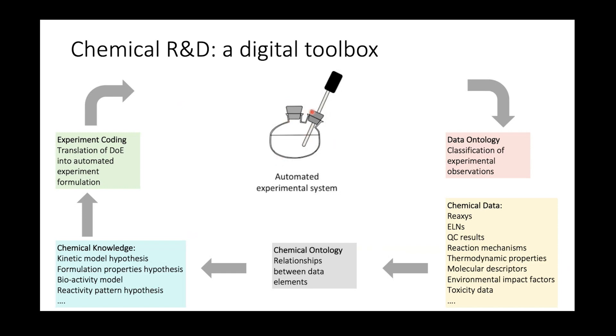Starting maybe in the middle with automated experiments, which generate large amounts of data. The data needs to be classified. So we need to understand what is it our machines have observed, how to place those data in the correct boxes in our data repositories. These repositories are then linked with all of the existing data - commercial databases such as Reaxis or CAS, your institutional ELNs, quantum chemistry results, thermodynamics, reaction mechanisms, environmental impact factors, toxicity.